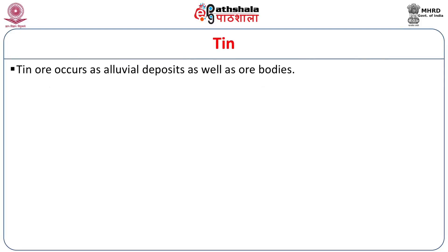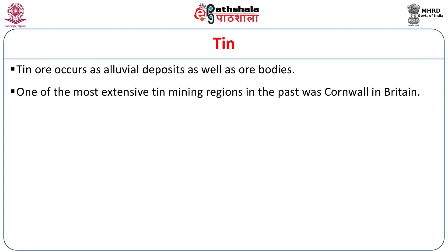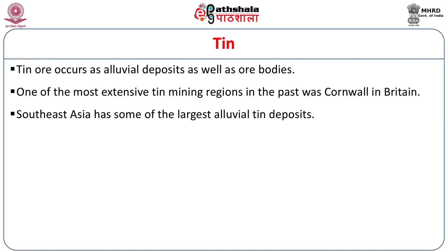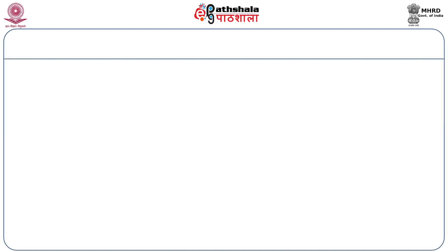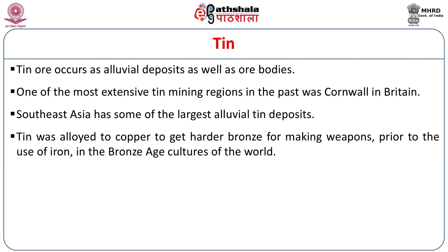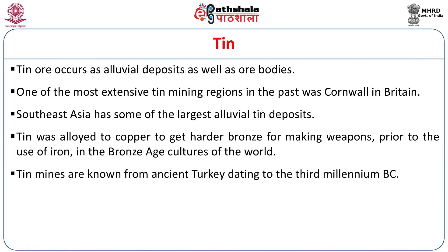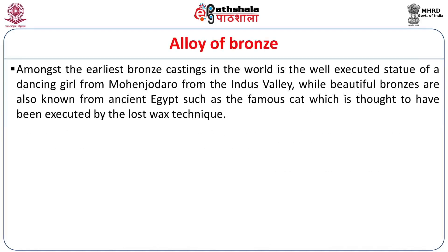Tin is another very important metal in antiquity, which was alloyed to copper to make bronze, typically to harden the soft copper, and then used to make tools and weapons. Tin ore occurs as alluvial or stream deposits and also as ore bodies. Extensive tin mines include Cornwall in Britain, while Southeast Asia and Thailand also have very large alluvial tin deposits. Prior to the use of iron, tin was alloyed to copper to get harder bronze for weapons in the Bronze Age cultures of the world, and Turkey is also known to have ancient tin mines dating back to the third millennium BCE.